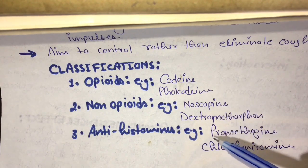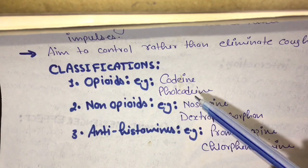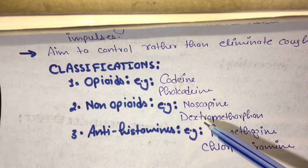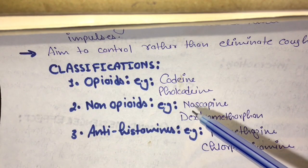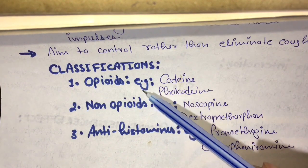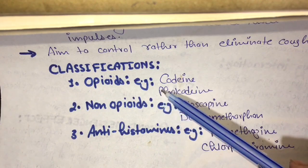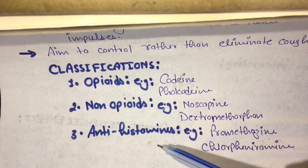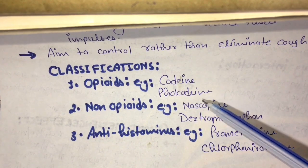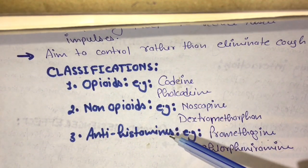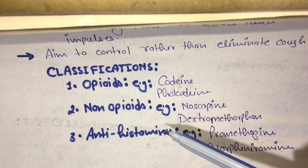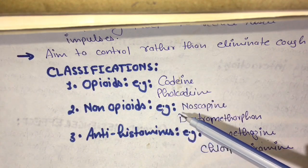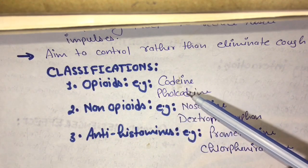There are three categories of antitussives. The main mechanism of action of antitussives is not clearly established. It is hypothesized based on each drug — opiates work on opioid receptors, non-opiates have a different mechanism of action, and antihistamines work on histamine receptors. The proper mechanism of action is not yet fully known.